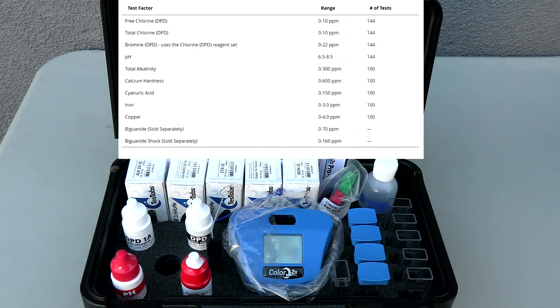You can do nine different test factors right out of the box: free chlorine, total chlorine, bromine, pH, total alkalinity, calcium hardness, cyanuric acid, copper, and iron.